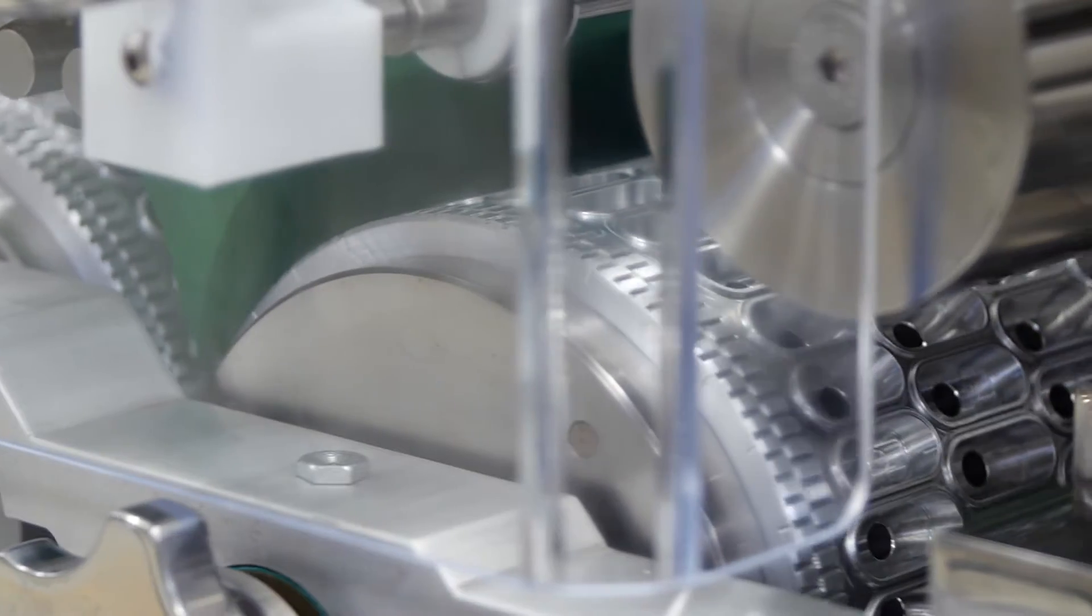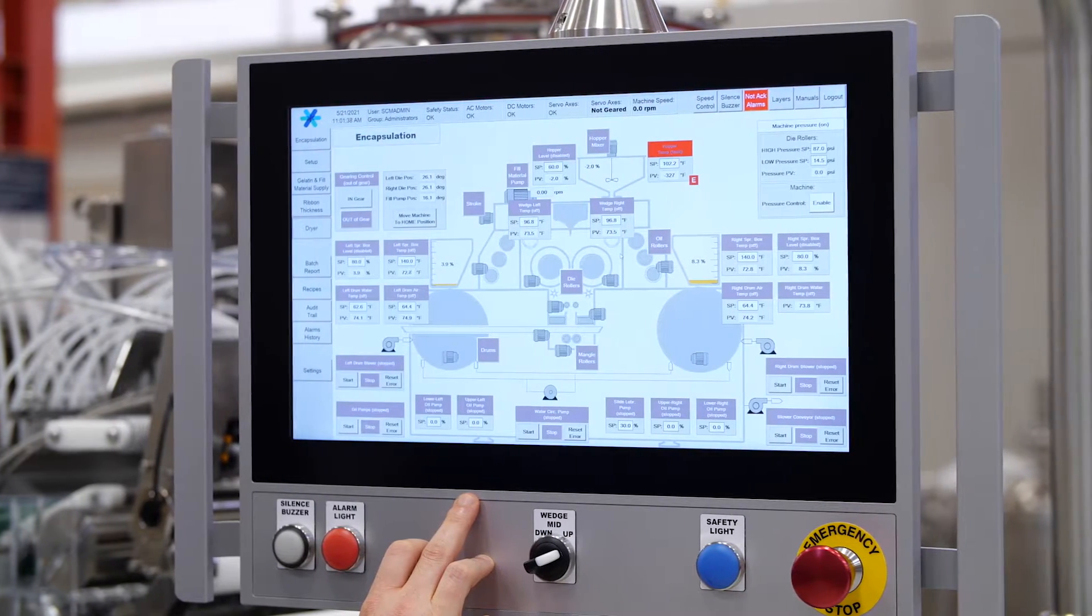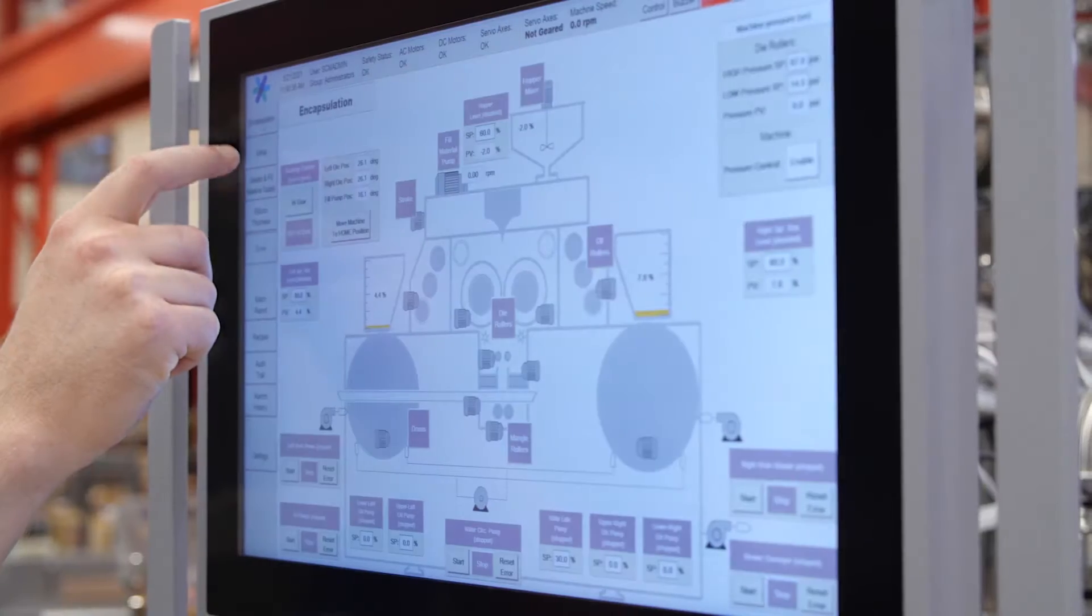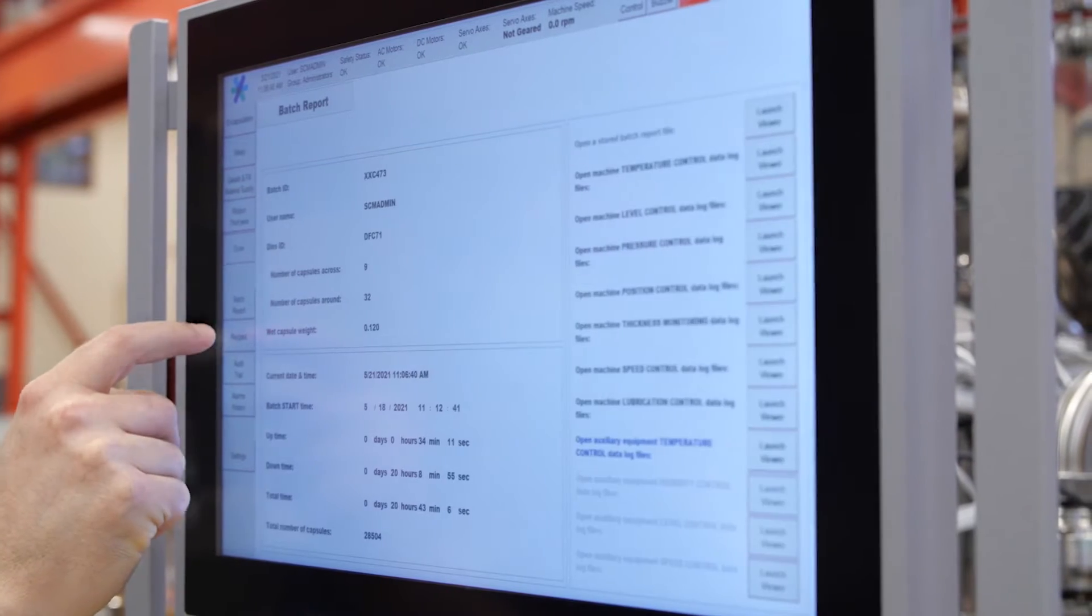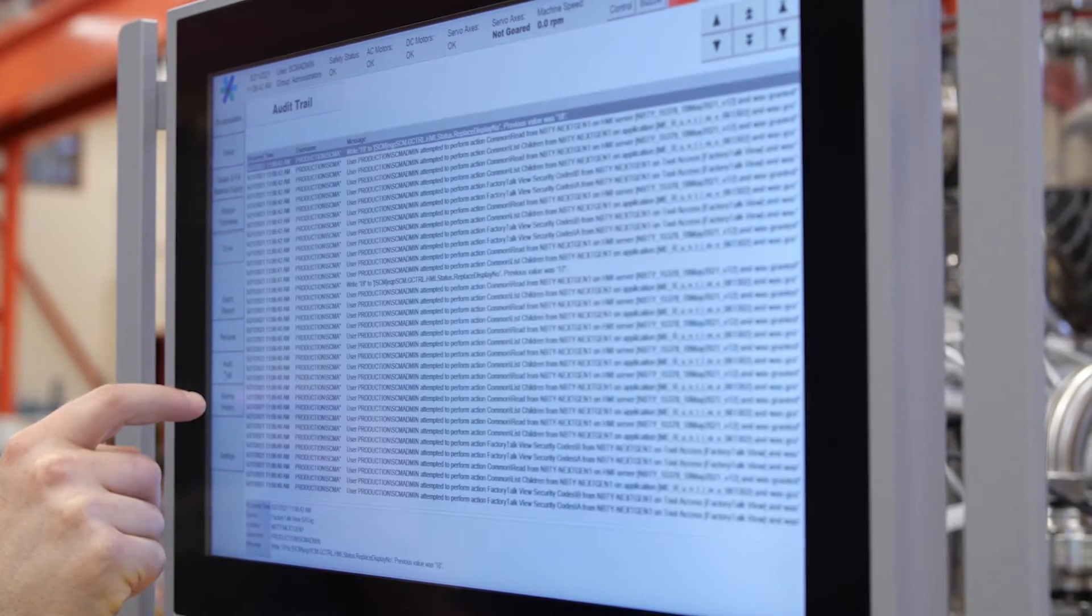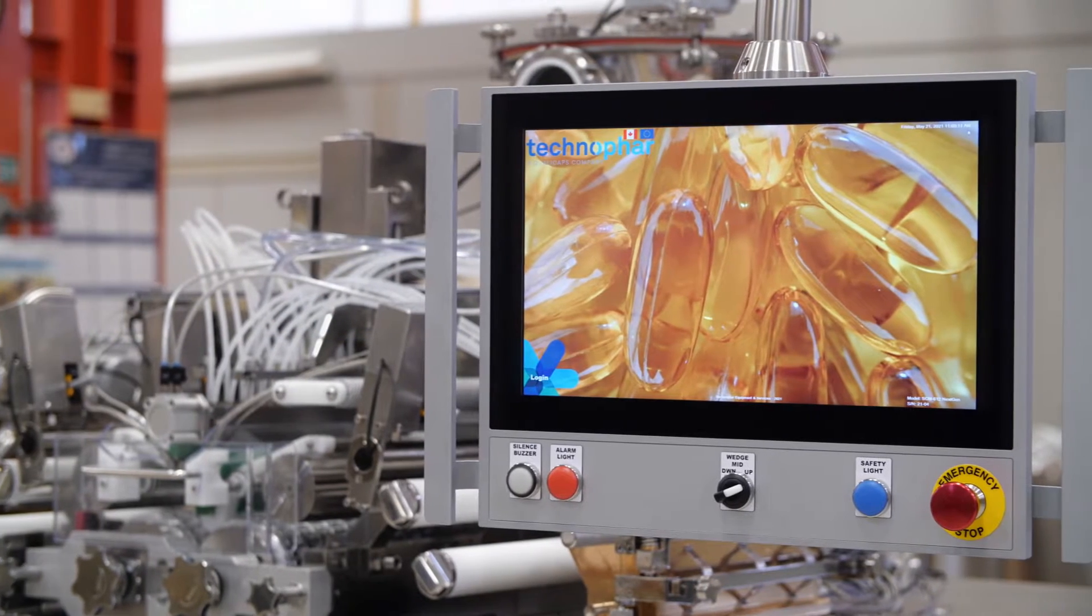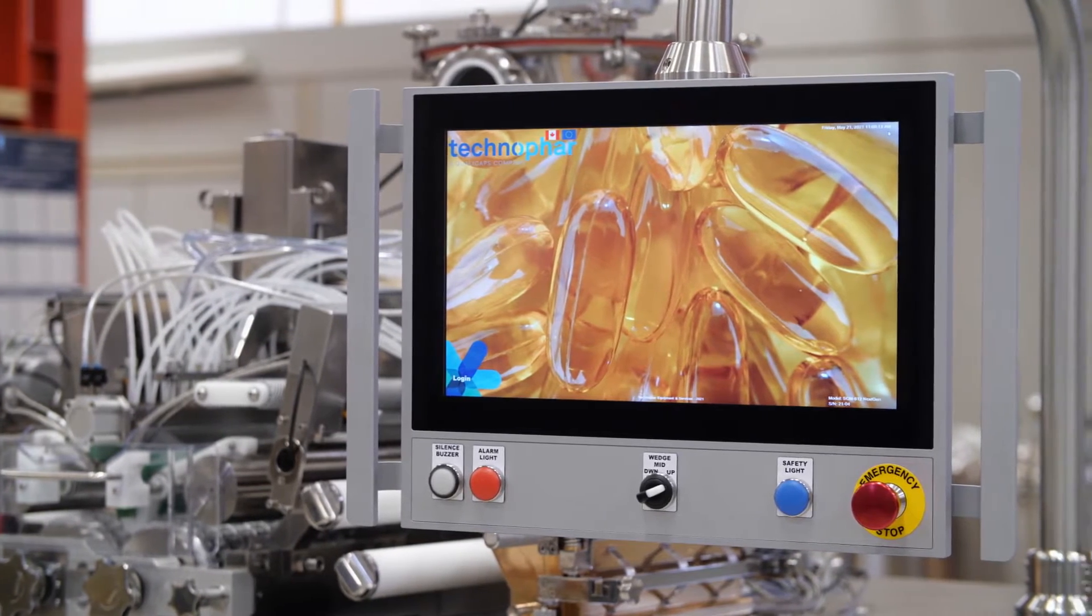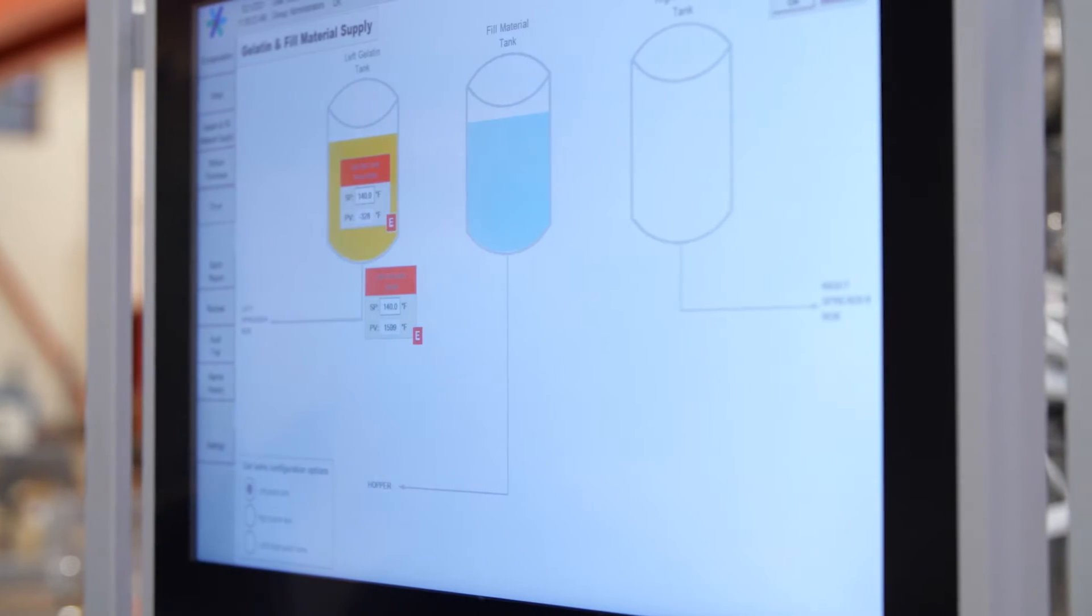So where does the encapsulation process begin? With the machine's PC-based control system embedded PC with technology and safety integrated, as well as a PC-based visualization system IPC with runtime software and industrial monitor. This screen allows the operator to view and control every step of the process, from production recipes to output speed.